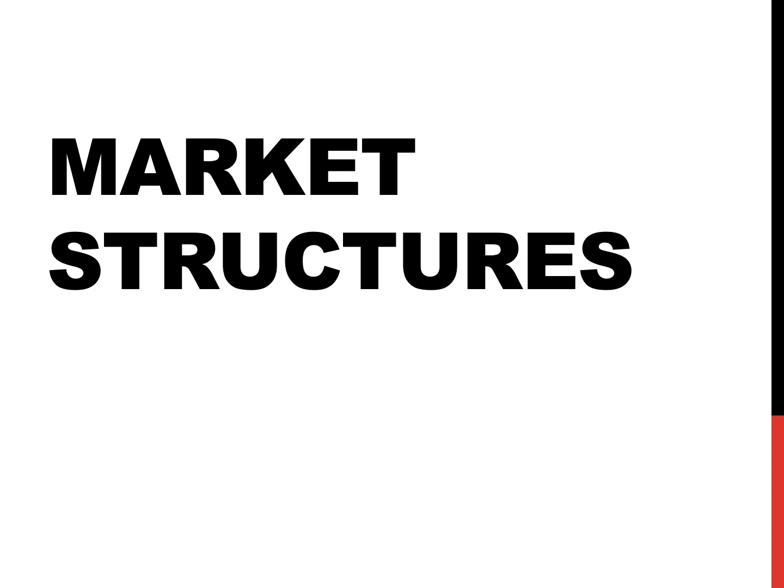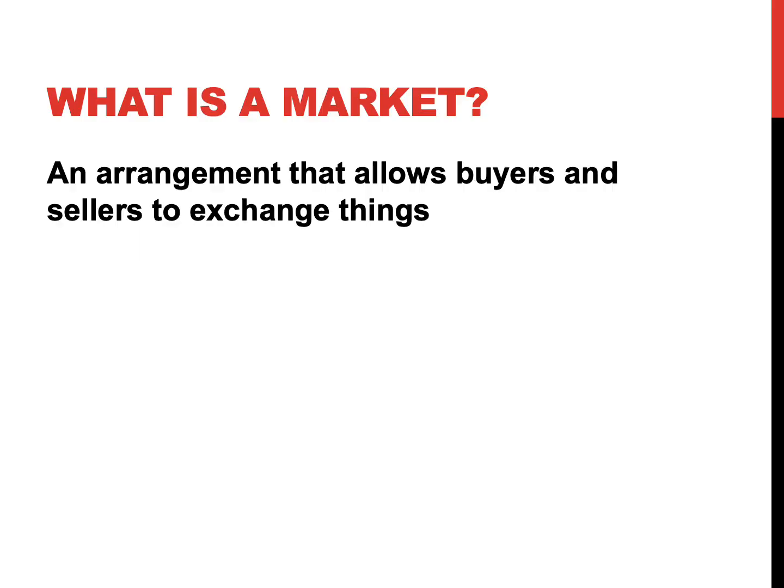Today we're going to talk about markets and the various kinds of market structures. As a quick review, what exactly is a market? A market is any arrangement where buyers and sellers come together to exchange things. This doesn't have to be a physical place like a farmer's market, although it could be. It could also be online, or it could just be out there in the ether like the job market.